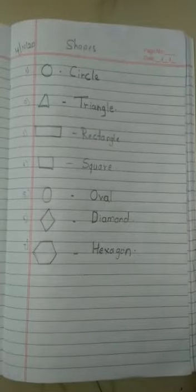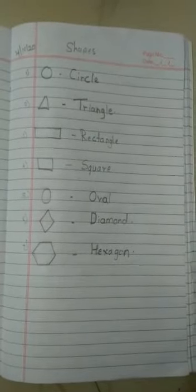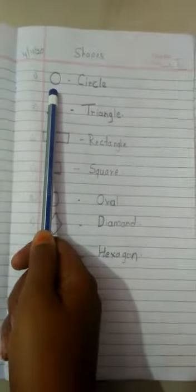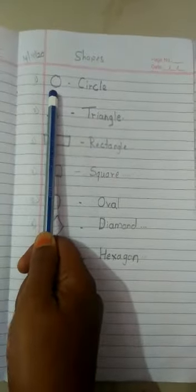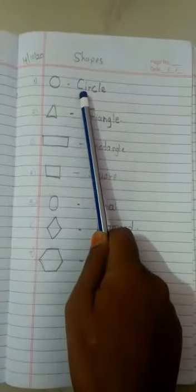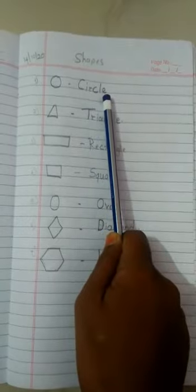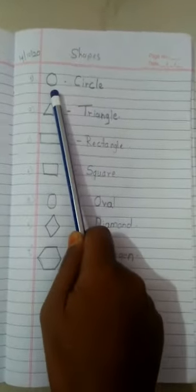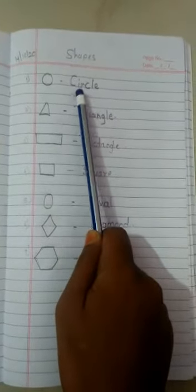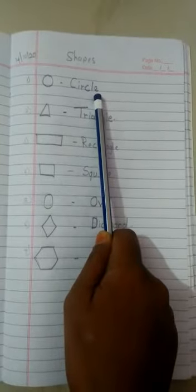Friends, now learn with me shapes. Look at your first shape, circle. The spelling of circle is C-I-R-C-L-E circle. What is the spelling of circle? C-I-R-C-L-E circle.